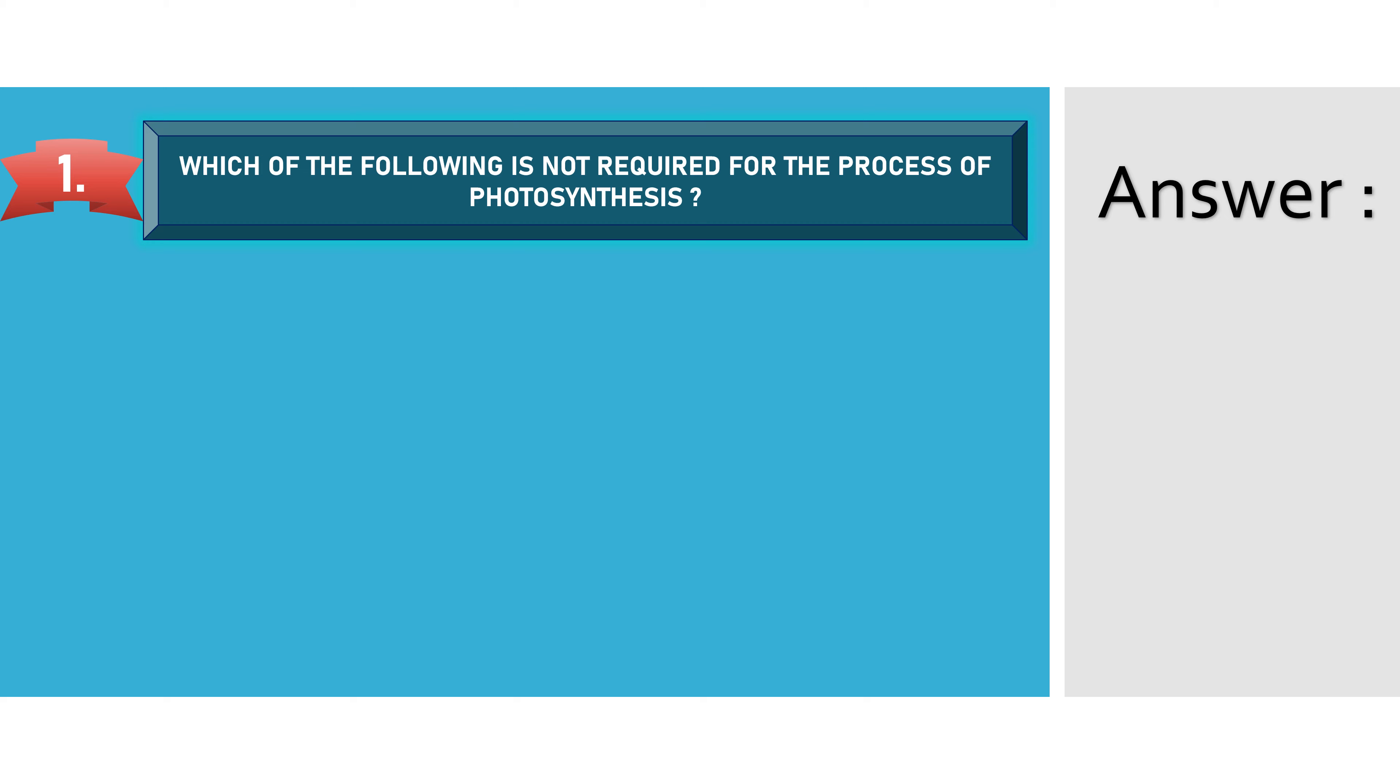Which of the following is not required for the process of photosynthesis? Option A: Water. Option B: Sunlight. Option C: Starch. And Option D: Carbon dioxide. The answer is starch.